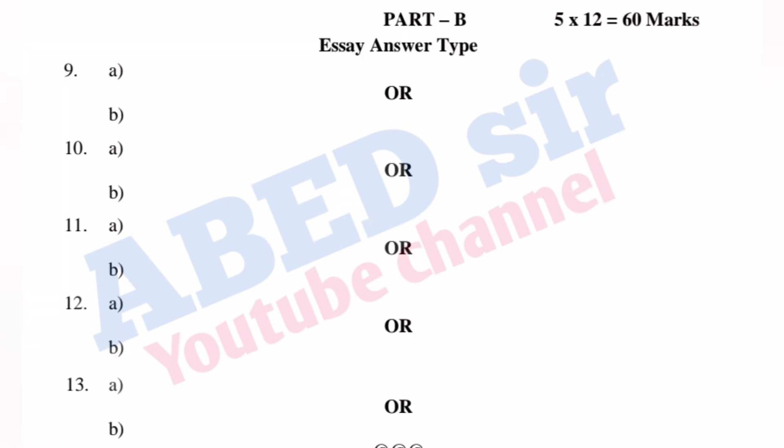Next, in Part B, mutual choice questions are there. A total of 5 questions are there and you have to answer all 5. Each question carries 12 marks, so 5 twelves of 60 marks you will get from Part B. Part B is 60 marks and Part A is 20 marks, making a total 80 marks paper for the semester exam.